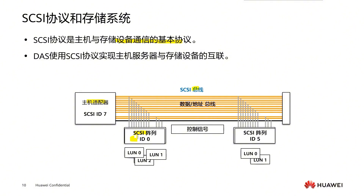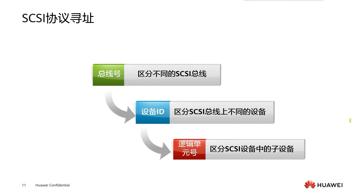In order to address devices connected to the SCSI bus, the SCSI protocol introduces SCSI device IDs and logical unit numbers (LUNs). On the SCSI bus, each device must have a unique device ID, including the host bus adapter in the server. Each bus including the bus adapter allows up to 8 or 16 device IDs. The device ID is used for addressing and also identifies the priority of the device in bus usage. Device IDs of different devices on the same bus must be different, otherwise it will cause conflicts. Each storage device may contain several sub-devices such as virtual disks, so the SCSI protocol introduces LUNs to address sub-devices within the storage device.